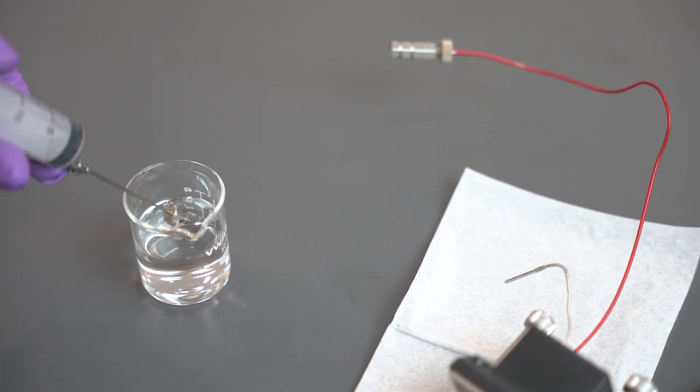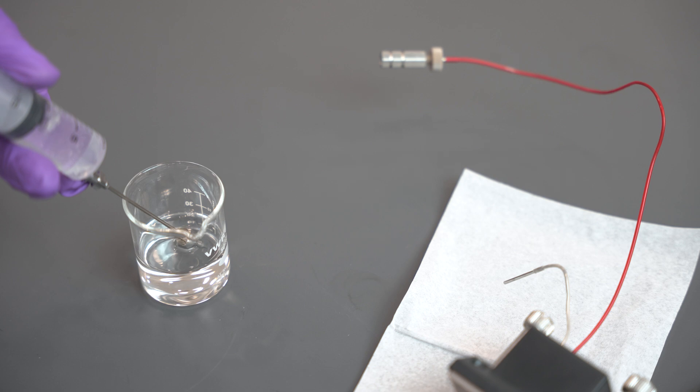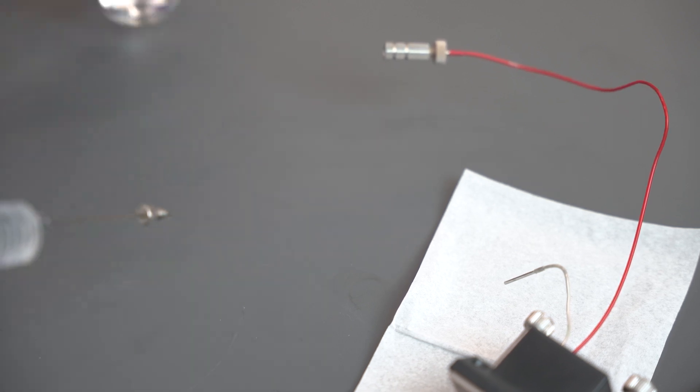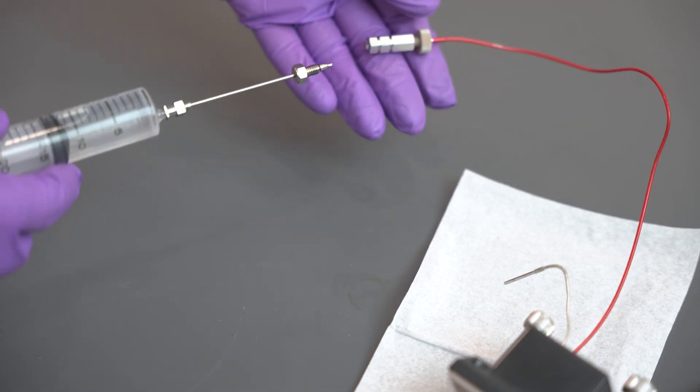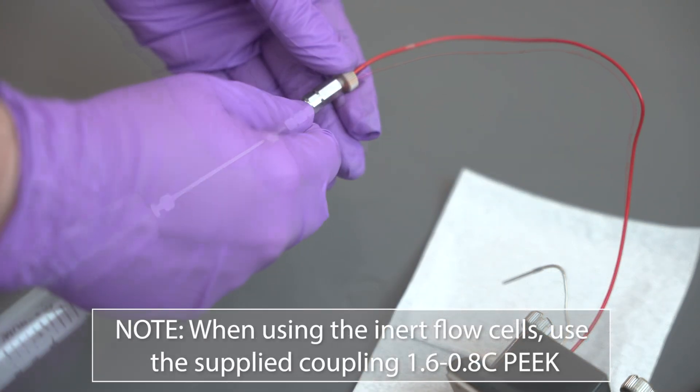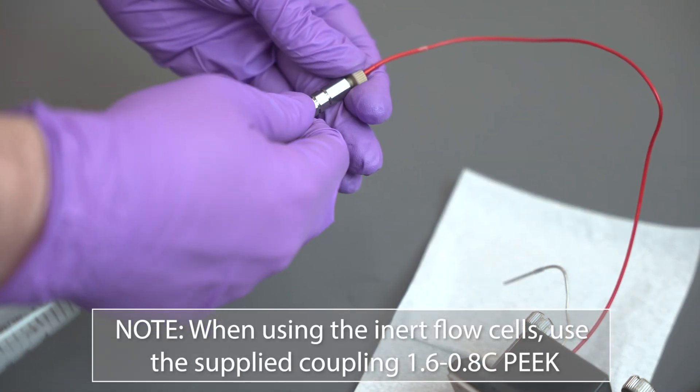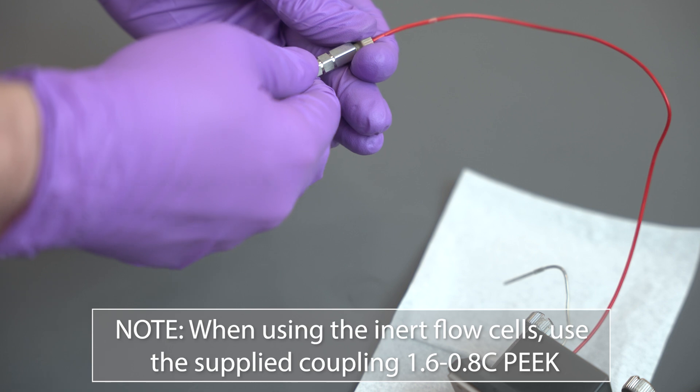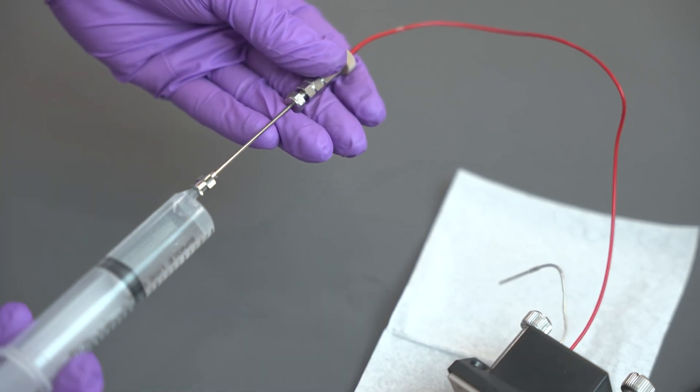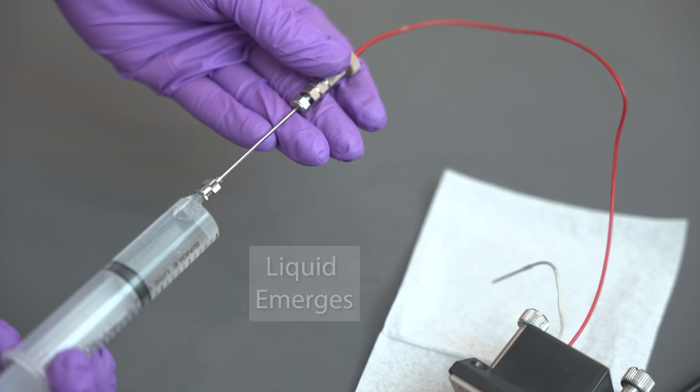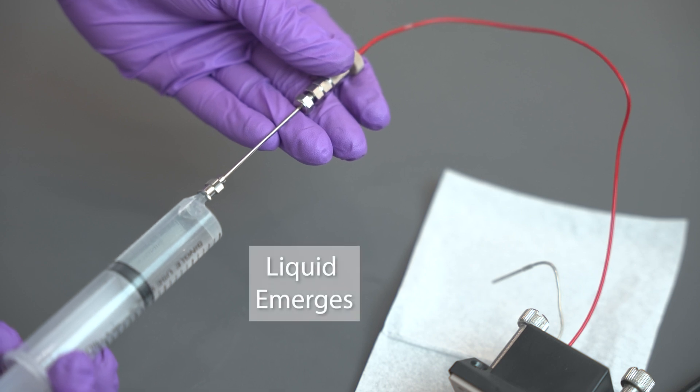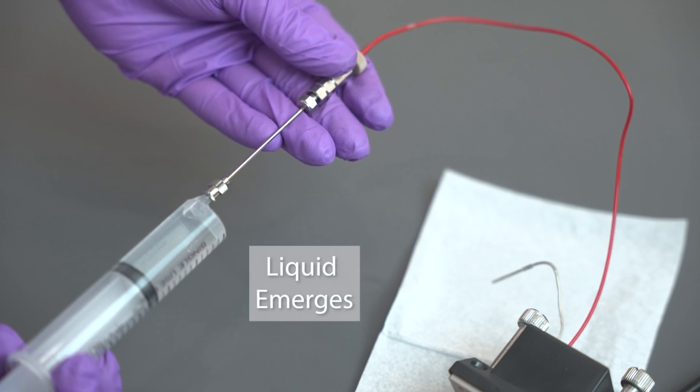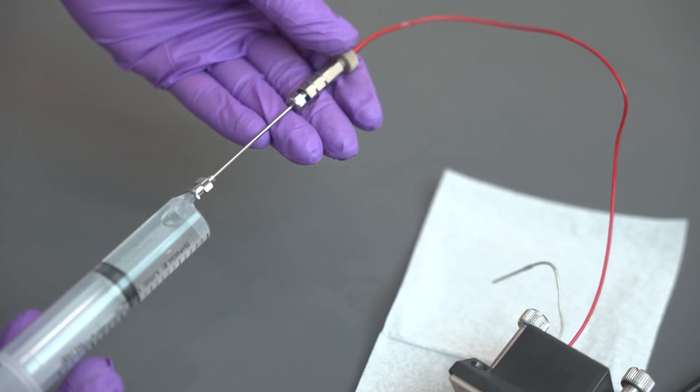Fill your syringe with 2-propanol. Attach the syringe with the needle that is equipped with the nut and ferrule to the inlet union of the flow cell. When using the inert flow cells, use the supplied coupling 1.6-0.8c peak. Push 2-propanol through the flow cell slowly until you see liquid emerging from the outlet tubing. If there are leaks, repeat the previous steps.